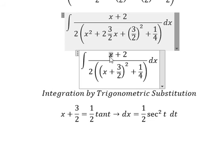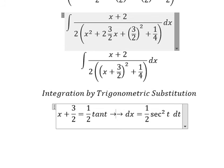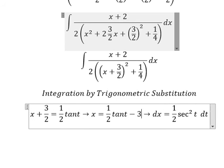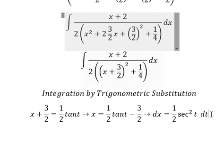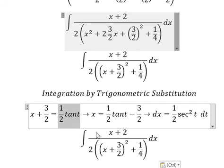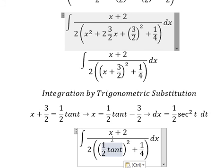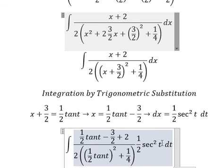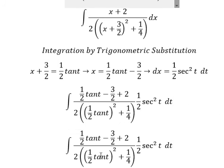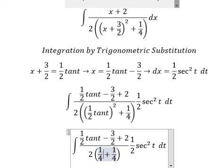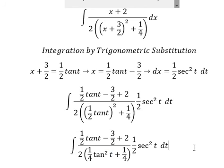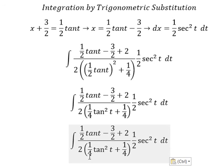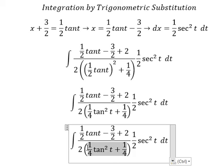Because we still have x in here, so we put about 3 over 2 on the right. We change for this one in the numerator and denominator. This one we get about 1 over 4 tan squared t. We have 1 over 4, 1 over 4, we can do factorization.